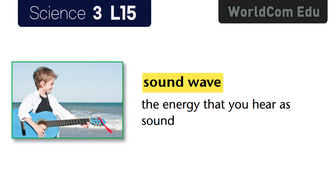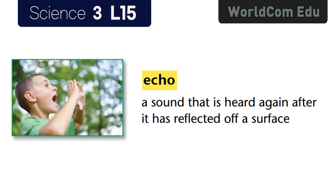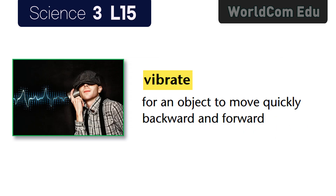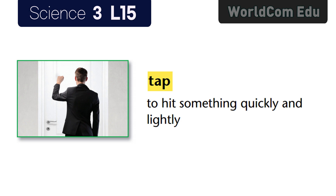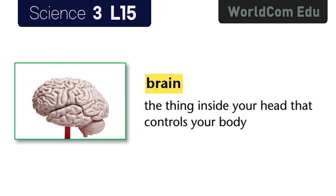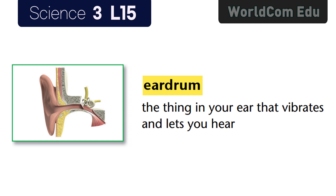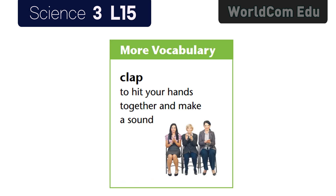Quick review of lesson 15 vocabulary — Sound Waves: Sound wave: the energy that you hear as sound. Echo: a sound that is heard again after it has reflected off a surface. Vibrate: for an object to move quickly backward and forward. Tap: to hit something quickly and lightly. Brain: the thing inside your head that controls your body. Eardrum: the thing in your ear that vibrates and lets you hear. Clap: to hit your hands together and make a sound.